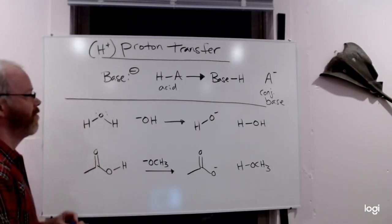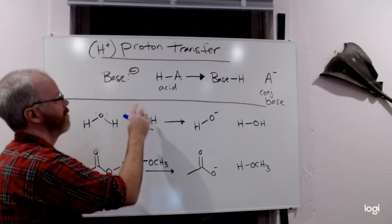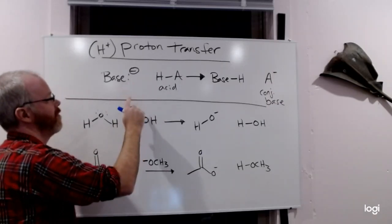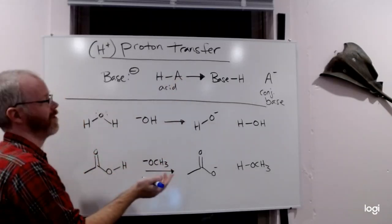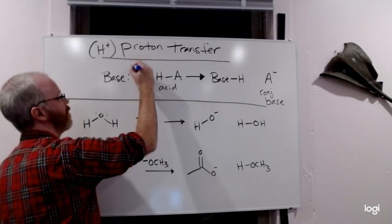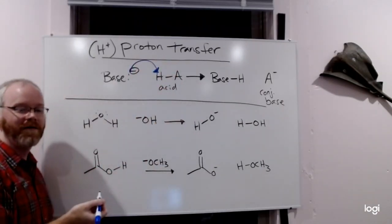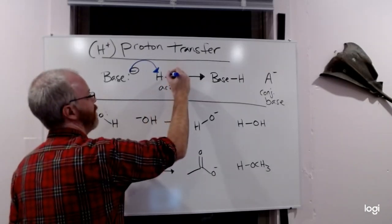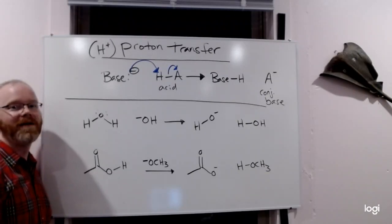In general, there's always a base - sometimes with a full negative charge, sometimes just a lone pair - and an acid represented by H bonding to A. The arrows always follow the same pattern: start at the base, go to the proton (the acidic hydrogen), and then the electrons go to the atom that the hydrogen was bonded to.